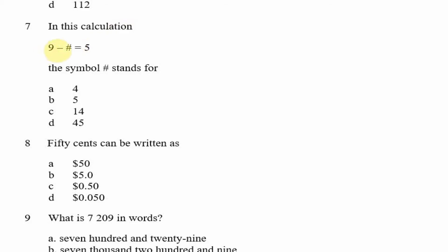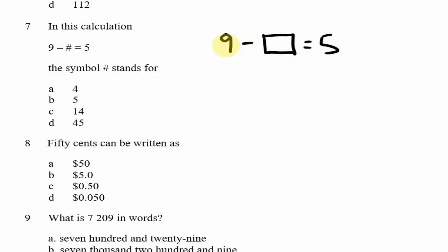Question 7: In this calculation, 9 minus the number sign equals 5. What does the number sign stand for? You can replace the number sign with a box or x. So: 9 minus what gives you 5? That would be 4. Nine minus 4 gives us 5, so our answer is option A, which is 4.